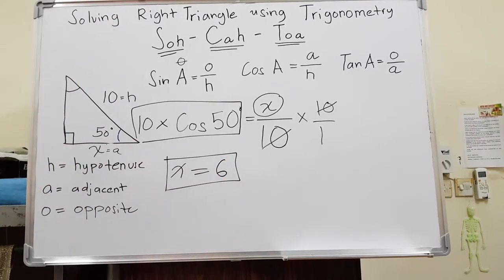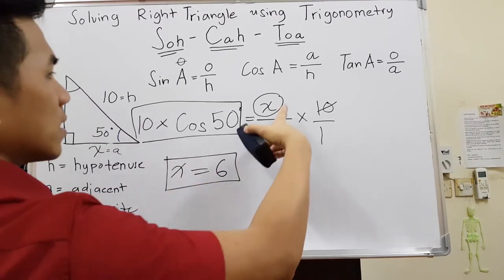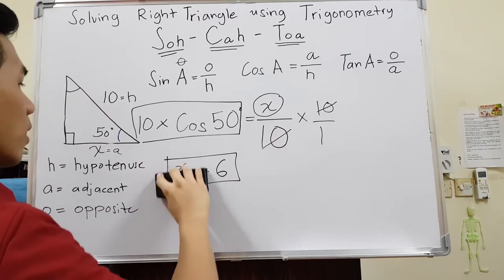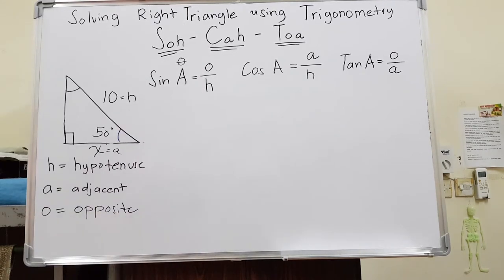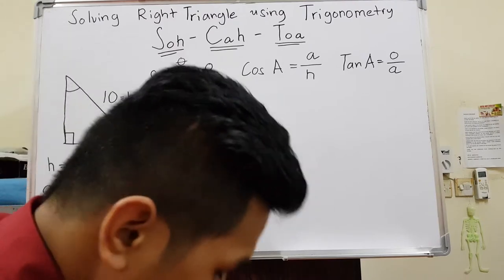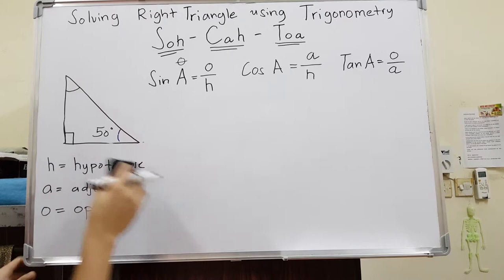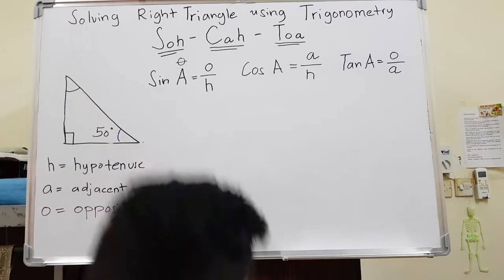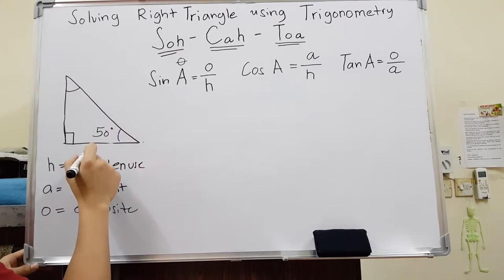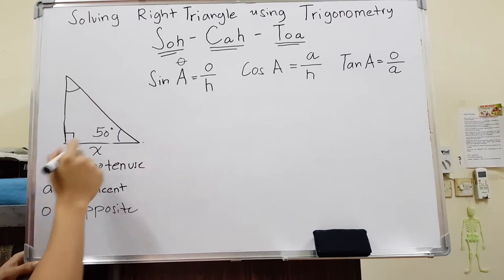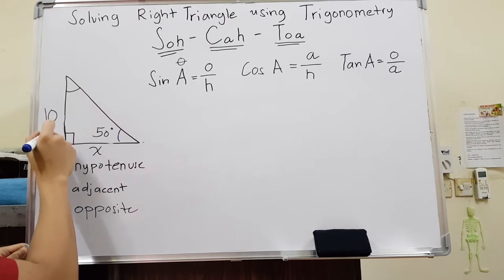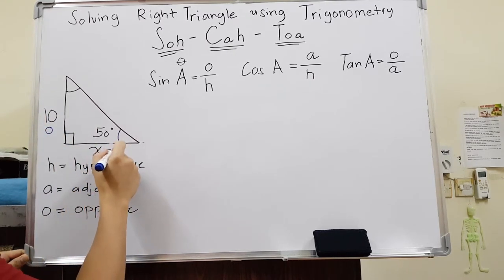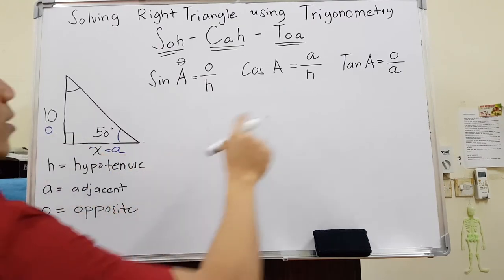That's how you find a missing side. Now let's do the last case: when the missing information is in the denominator. Say the adjacent side X is missing, and we are given the opposite, which is 10, and the angle is 50 degrees. Label your sides: 10 is opposite and X is adjacent. We have O and A, so we use tangent — TOA.